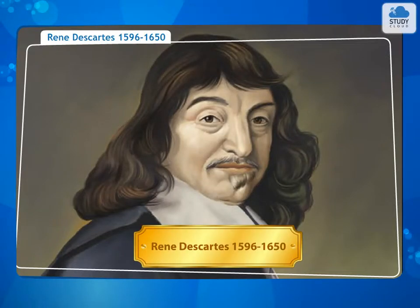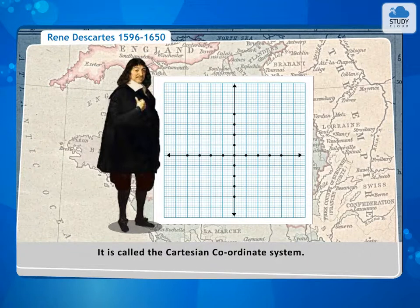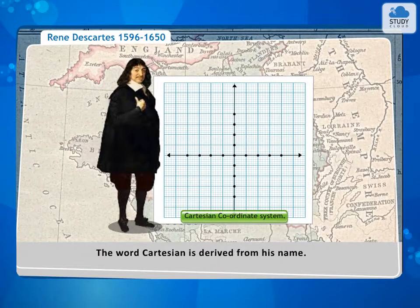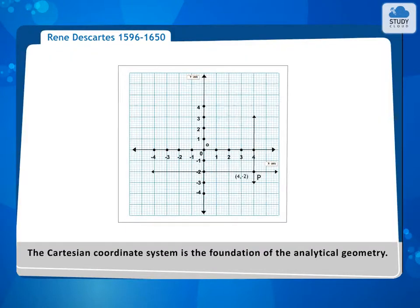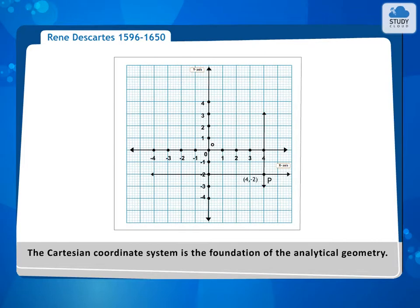René Descartes, 1596–1650, a French mathematician of the 17th century, proposed the coordinate system to describe the position of a point in a plane accurately. It is called the Cartesian coordinate system — the word Cartesian is derived from his name. The Cartesian coordinate system is the foundation of analytical geometry.